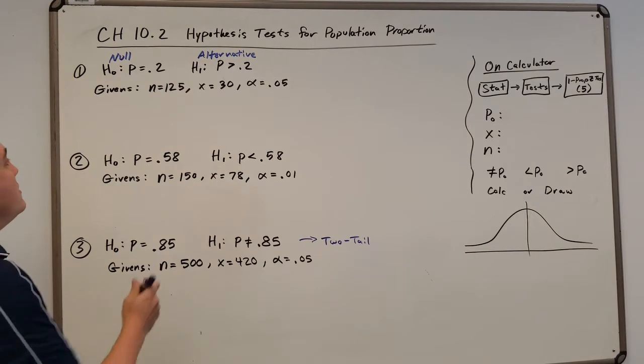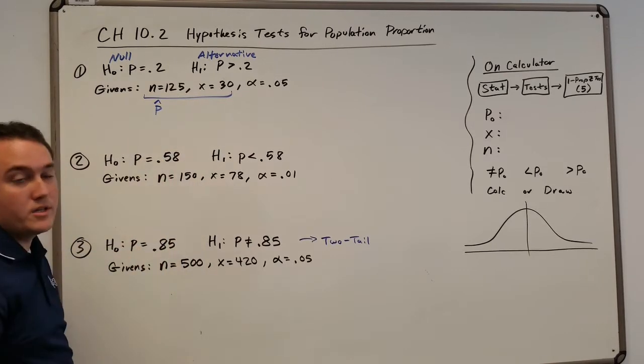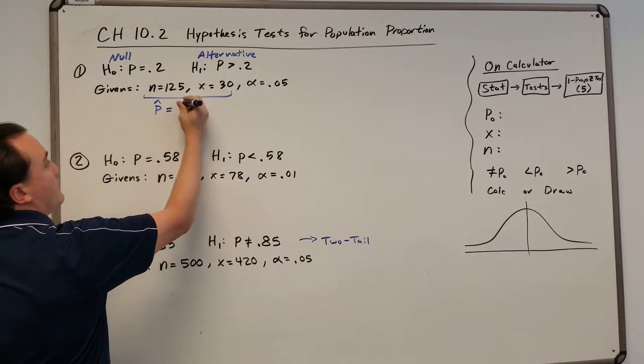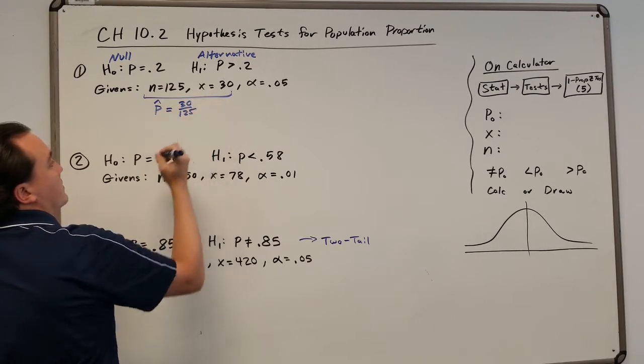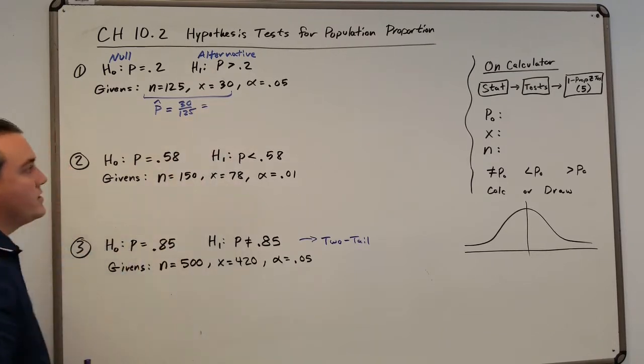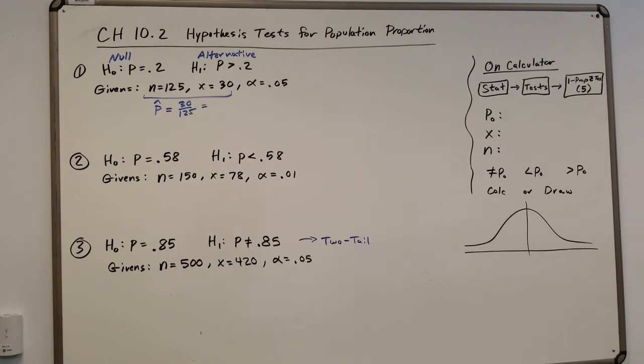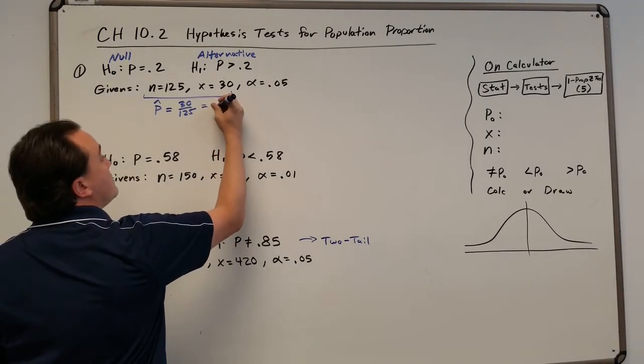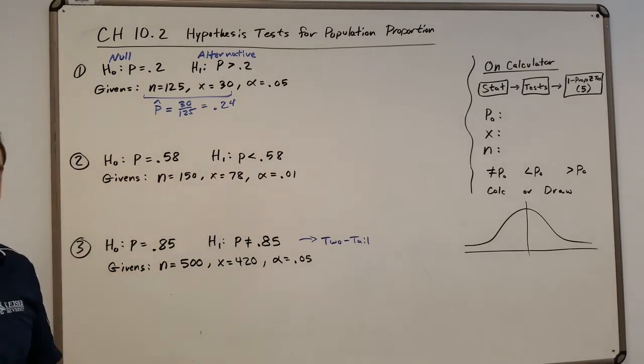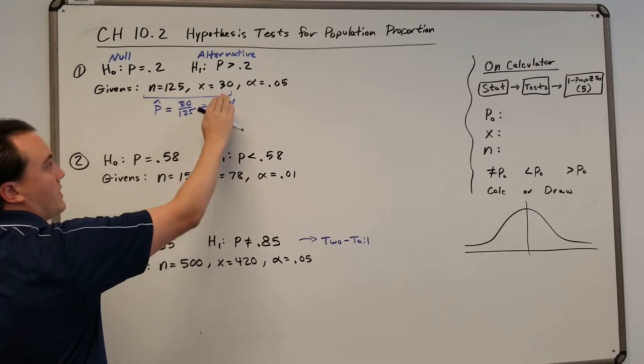So we're going to have this to the side, and this is what you would type in to find these values. First of all, we have this given to us. This gives us our new population proportion, or our sample population proportion, which is 30 divided by 125. Whatever that number is. You can calculate the z-score for this.